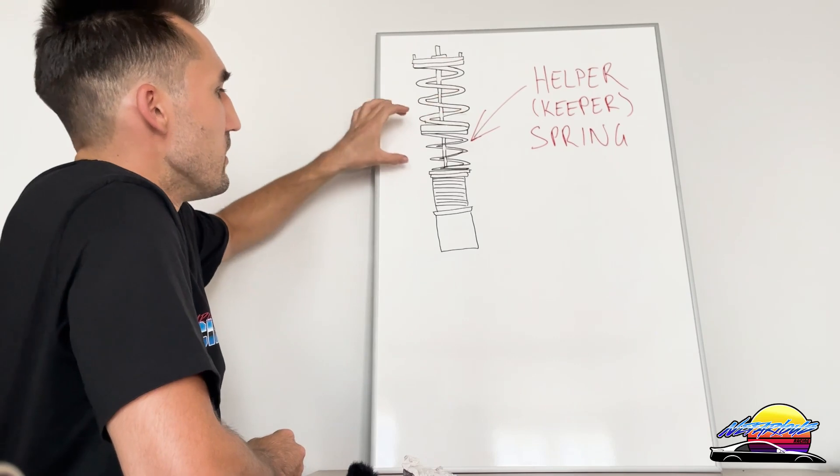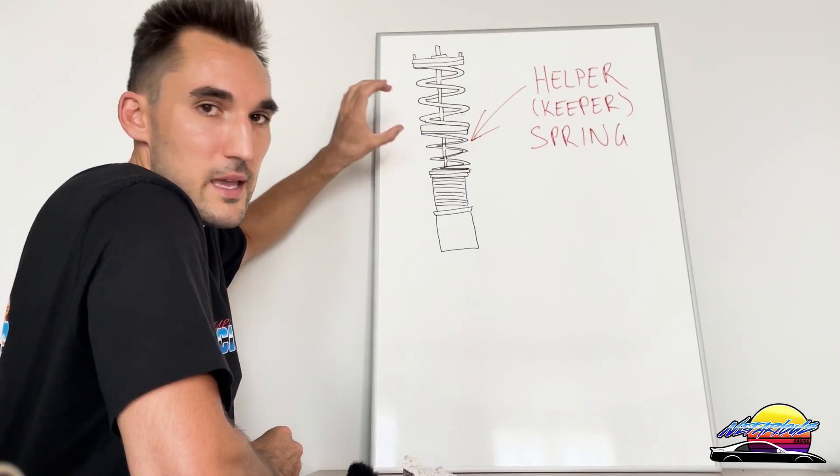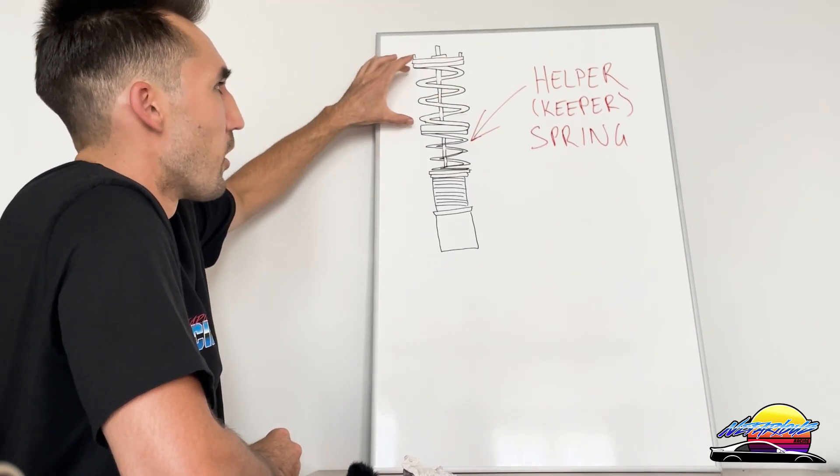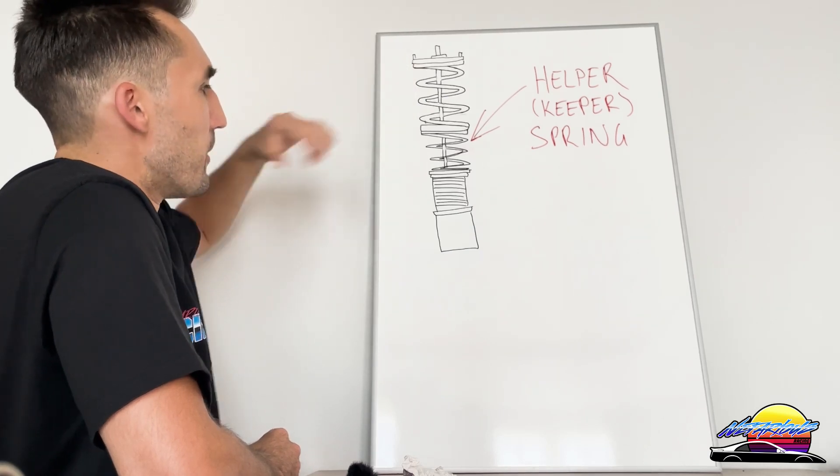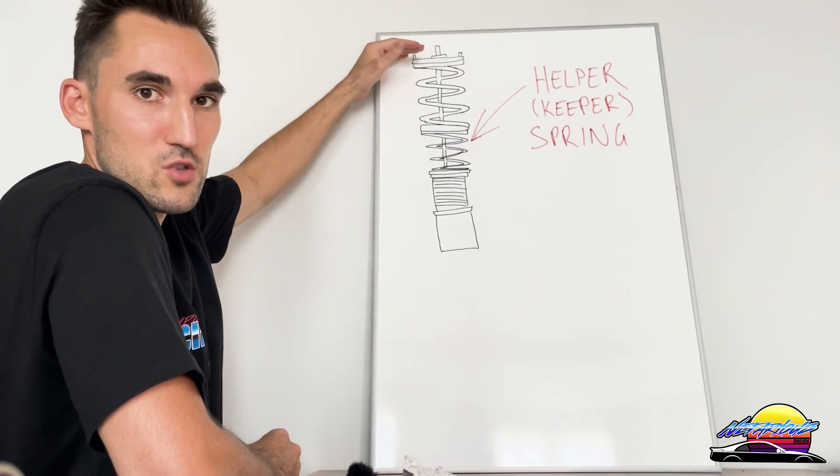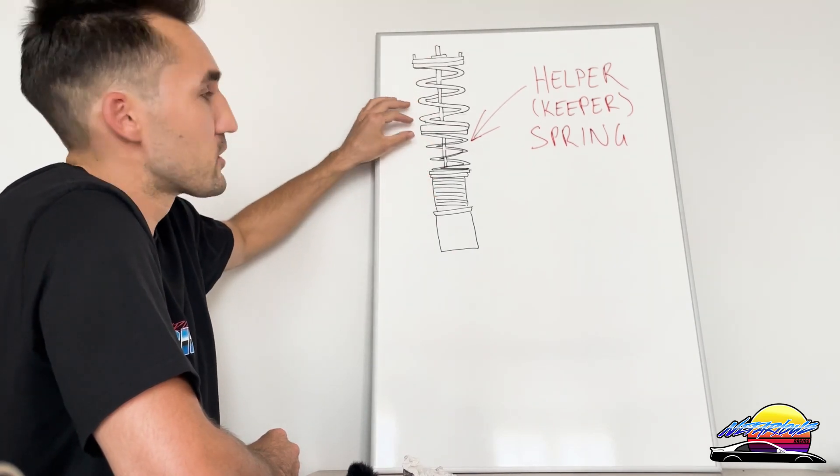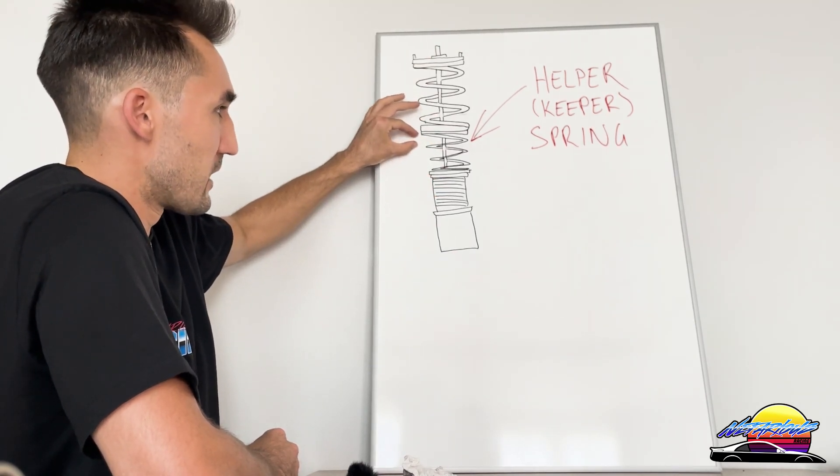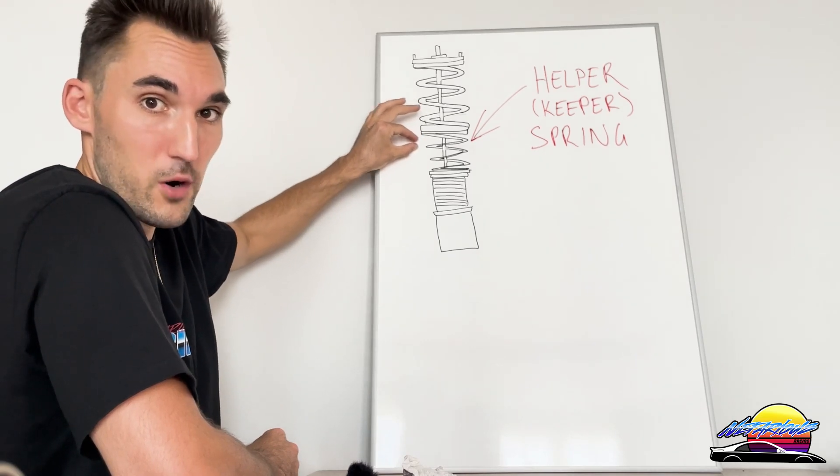Basically, this spring's job is just to keep the top spring captive. The purpose of it is when the load is put on the coilover and you install it in the car and drop the wheel on, this spring is going to collapse completely and just be a fully compressed firm piece of metal. Then this spring does its job with the wheels on the ground.